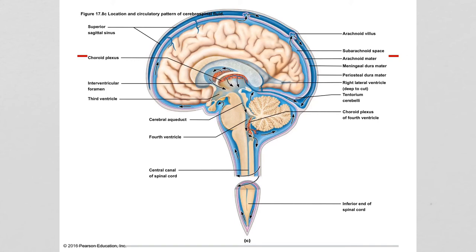We've made it through all the brain structures I expect you to know for the next quiz. In addition to these brain structures, I want you to be able to identify the majority of them on your sheep brain. Your brain quiz will include both illustrations and pictures of a human brain and a sheep brain. The last thing you need to know about are the cranial nerves.